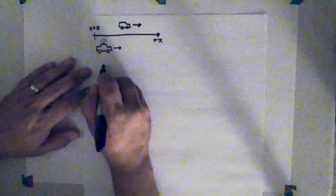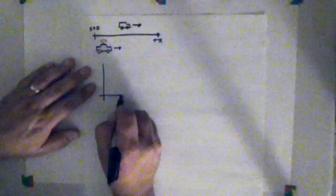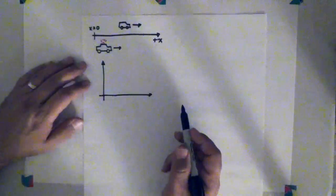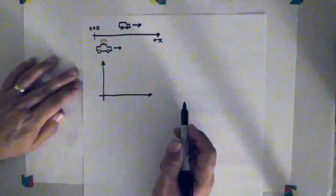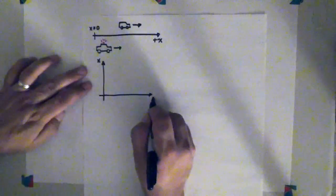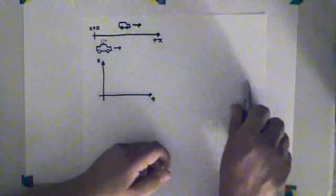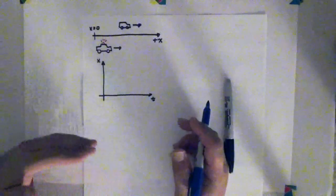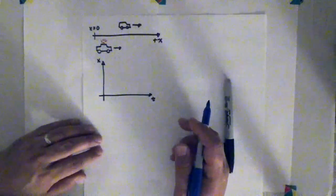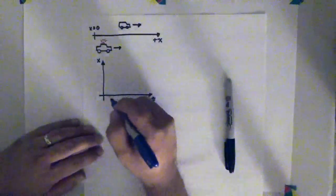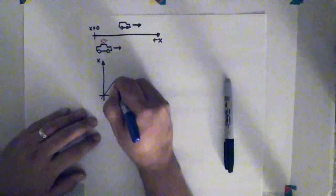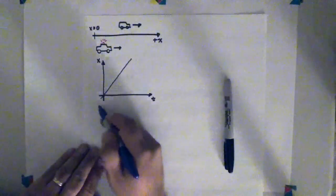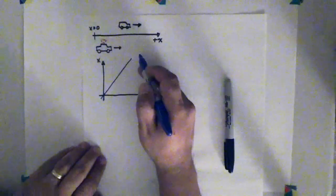So, the whole point in graphs is to kind of illuminate for you what the physical properties of the problem are. And in this case, I want to draw a position versus time graph. And the reason I'm choosing that graph is because we're actually asked to find the positions. So, this is position versus time. And since I am traveling with constant speed in the positive direction, my line on this graph that represents my position as a function of time is a line with constant slope, with constant positive slope because I'm moving in the positive direction.